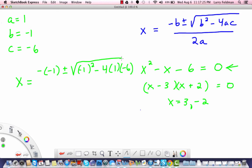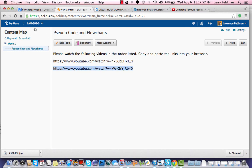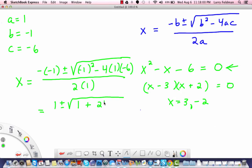And we have 4 times 1 times negative 6—that's negative 24—but we have a negative sign here, so we end up adding 24. Then we put that over 2.